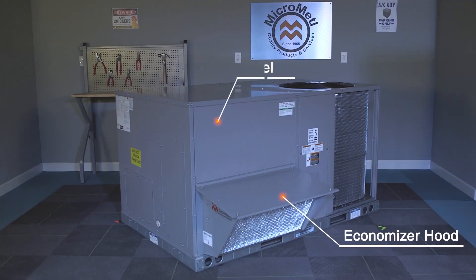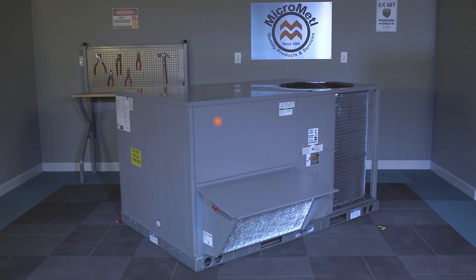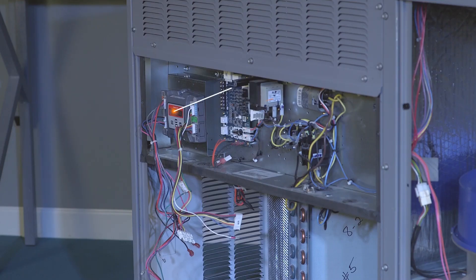Install the economizer hood and factory filter access panel. Mount the W7220 controller assembly next to the unit control board.